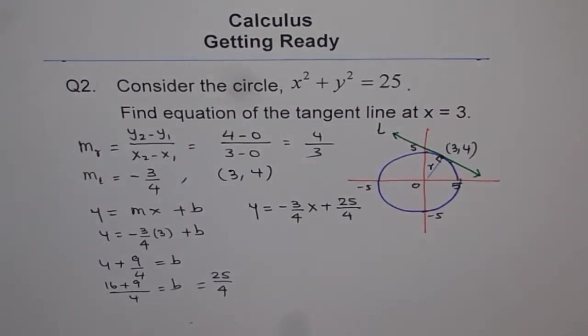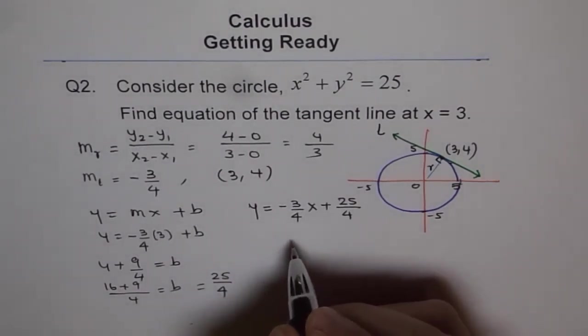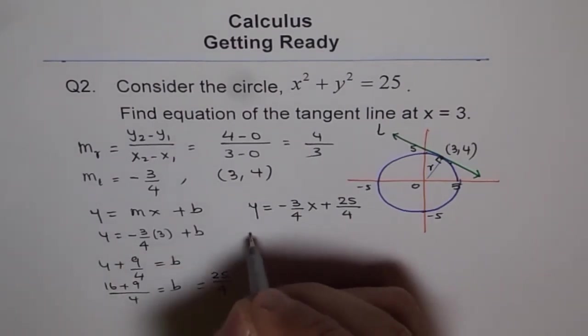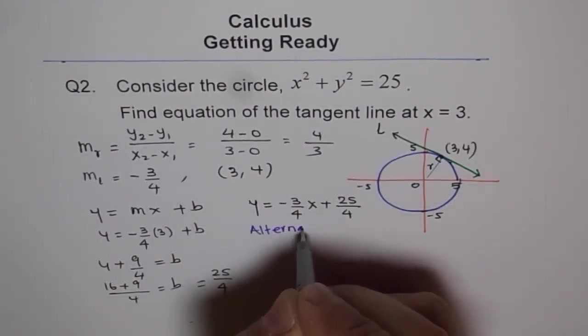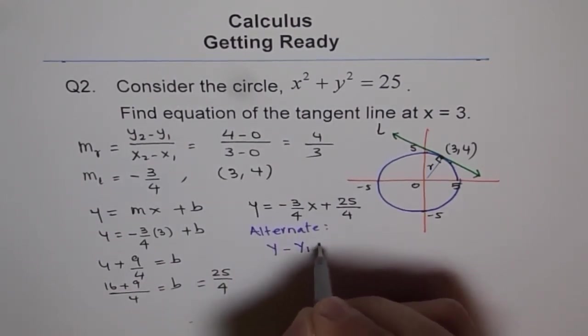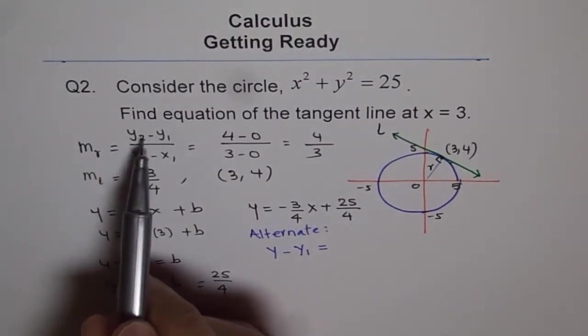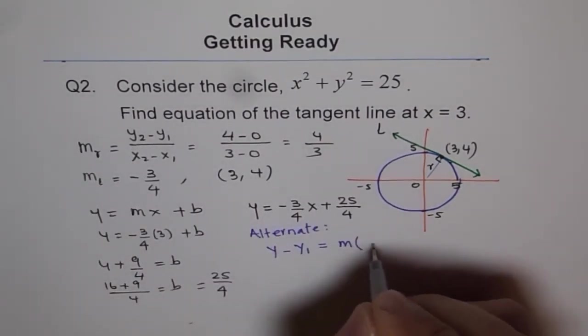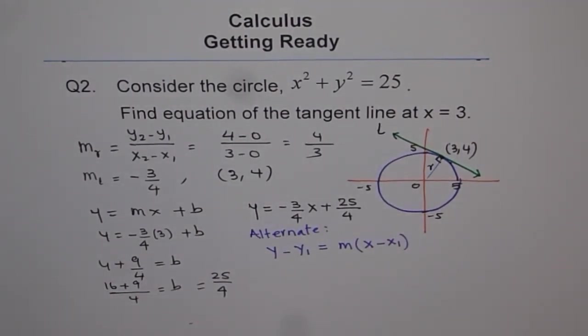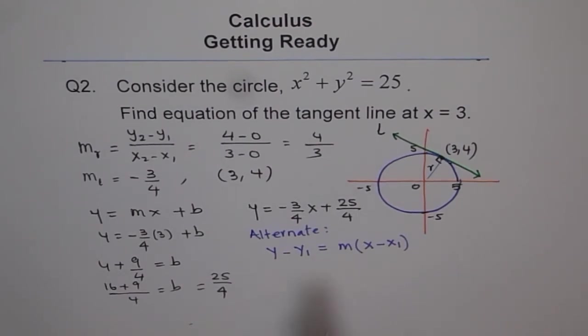So you can get the equation like this. Now, the other method could have been Y - Y₁. You remember the other equation? This is slope intercept form. So alternate, we could use this equation: Y - Y₁ = M(X - X₁), that is rewriting this slope. So M times X - X₁. So that could give you another equation or rather the same equation in standard form.